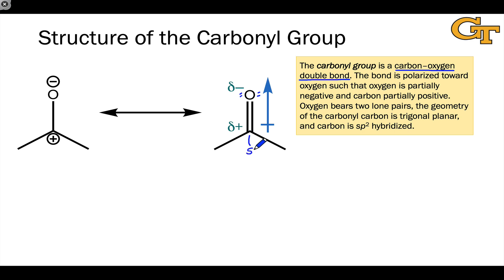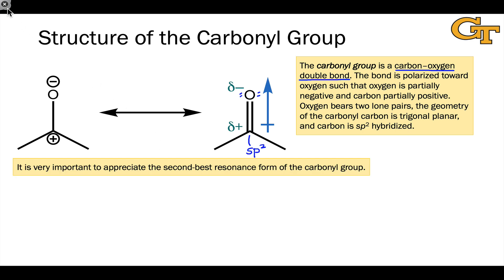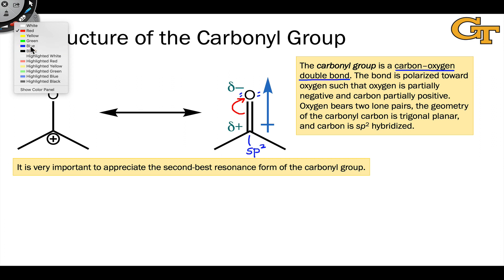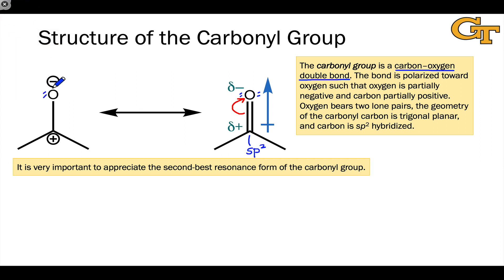The geometry of the carbonyl carbon is trigonal planar, as we would expect from VSEPR theory. This carbon is also sp2 hybridized, having three electron groups around it. There's an important alternative resonance form of the carbonyl group, generated by pushing the C=O pi electrons toward the more electronegative oxygen. This gives three non-bonding lone pairs at the carbonyl oxygen and a positive formal charge at the carbonyl carbon. This resonance structure reveals that the carbonyl oxygen has potential to act as a base or nucleophile.